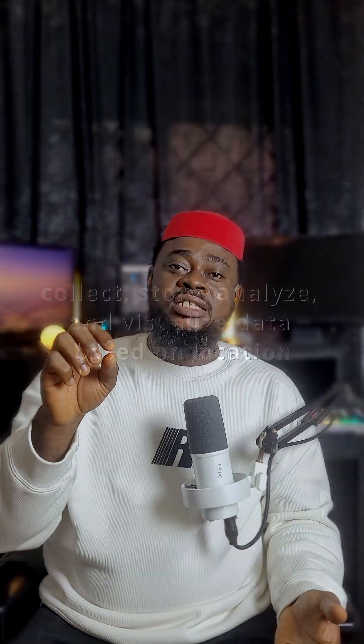GIS means Geographic Information System. The system will collect, store, visualize and analyze data based on location. A regular map is just a map, but GIS will tell you what happened in that area - like how many people live there, the weather, the land use, traffic, everything.